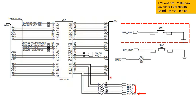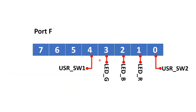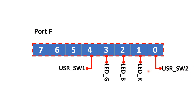Let's take a closer look at Port F. I've redrawn Port F here showing all its bits. Bit 0 is connected to USR_SW2, bit 1 to the red LED (LED_R), bit 2 to the blue LED (LED_B), bit 3 to the green LED (LED_G), and bit 4 is connected to user switch SW1 — the bit we'll be watching in the program.